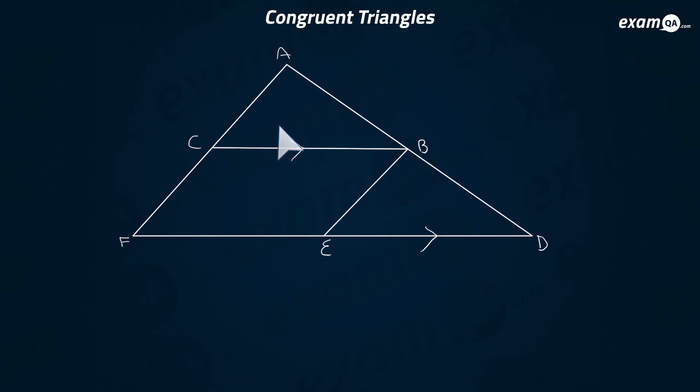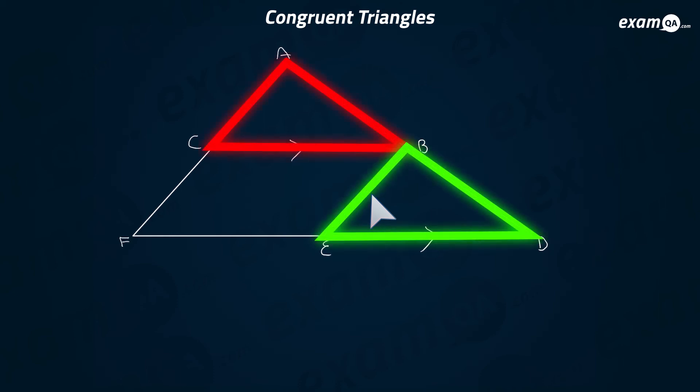Next step, we can say that AC must be the same as CF, as C is the midpoint of AF. Also, CF is the same as BE, because they're opposite sides of a parallelogram, which means AC is the same as BE. Now, we've shown all three sides are the same. Therefore, using the rule of side, side, side, these two triangles must be congruent.